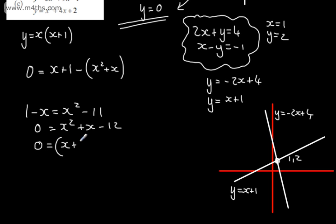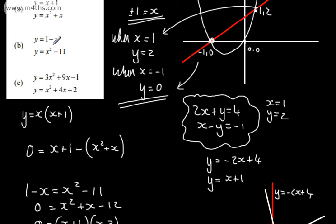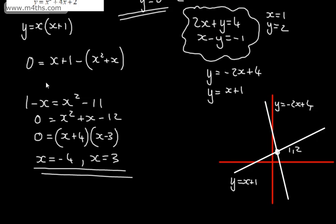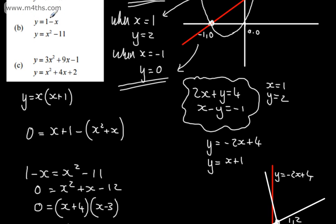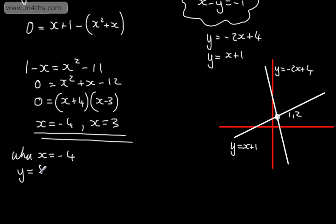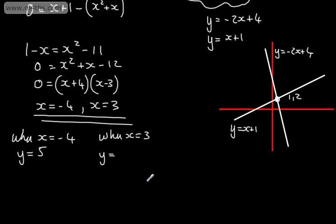We can factor this quadratic to get (x plus 4)(x minus 3) equals 0, giving x equals negative 4 and x equals 3. We must substitute back in — I'll use the linear equation as it's easier. When x equals negative 4, y equals 1 minus (negative 4) equals 5. When x equals 3, y equals 1 minus 3 equals negative 2. You must solve for both x and y — don't just solve for x and leave it.